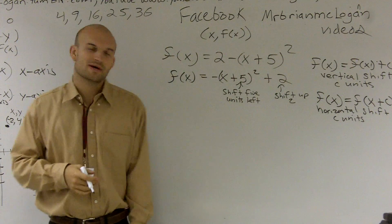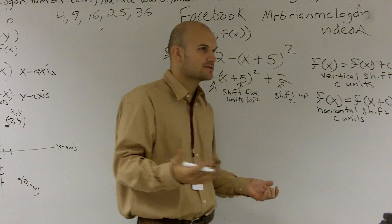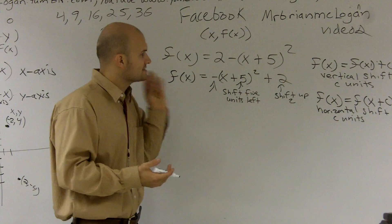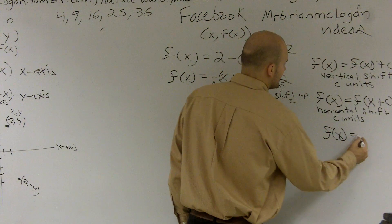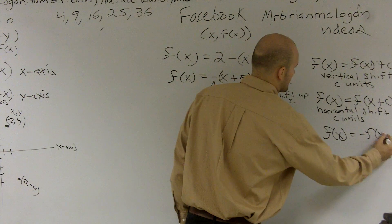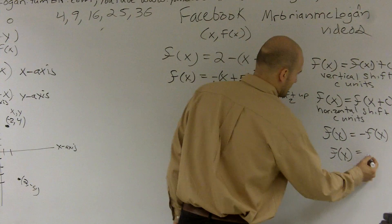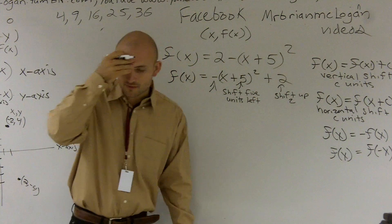Then the last thing we do is we have this negative sign. And the last thing we looked at was talking about reflections. So what are going to be your reflections? And we had two different reflections. We had f(x) = -f(x), and then we had f(x) = f(-x). And I'll try to go through this one more time.